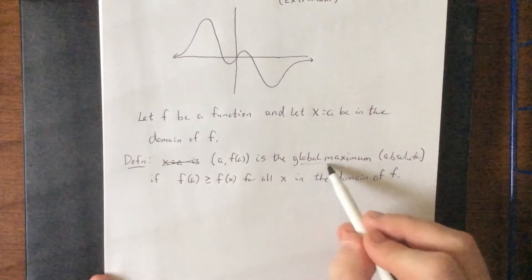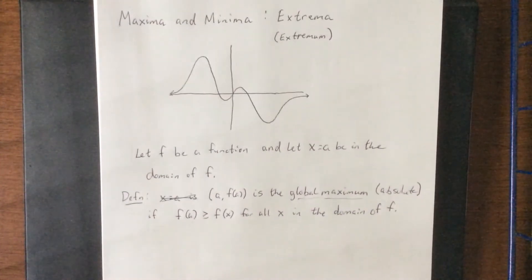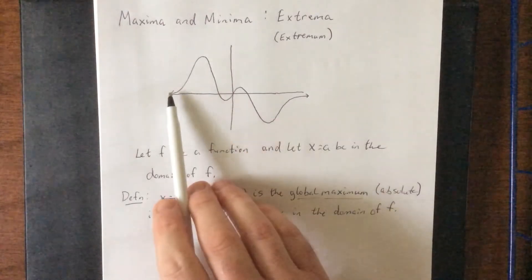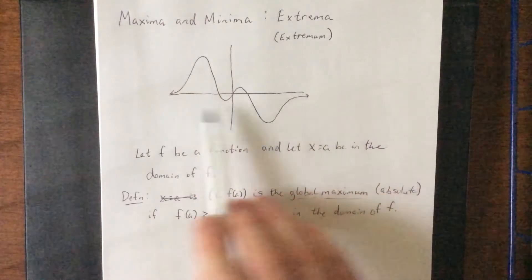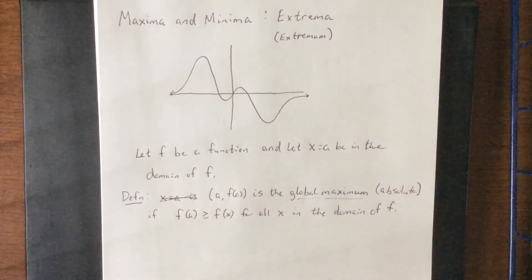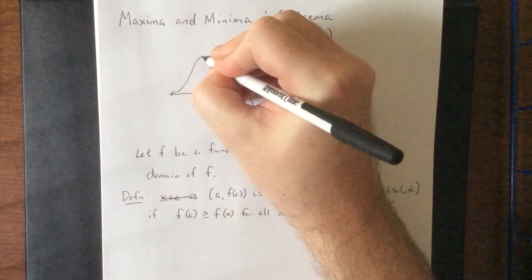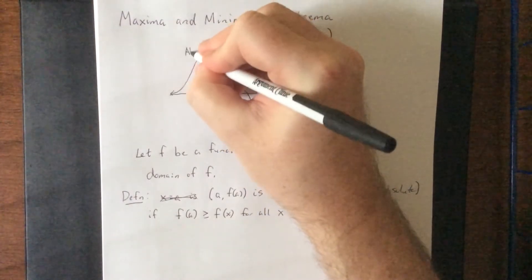So global maximum is simply referring to the highest point on our function. Now I have attempted to sketch this in such a way where we see that this thing is approaching the x-axis on its more extreme x portions, but there is a point on here that would correspond to the absolute maximum. The absolute maximum or global maximum would be right here.